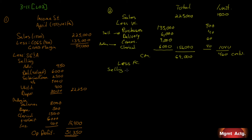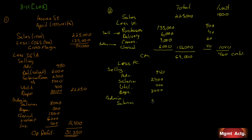Now subtract fixed costs. Under selling: advertising is $950; sales salaries (not commissions) are $2,900; utilities are $400; depreciation is $3,000. Under admin: executive salaries are $8,000; depreciation of office equipment is $500; clerical fixed component is $1,500 — we already handled the variable part above; insurance is $400. Total fixed costs add up to $17,650. Subtracting from $69,000 gives $51,350 — the same operating profit as the traditional format.